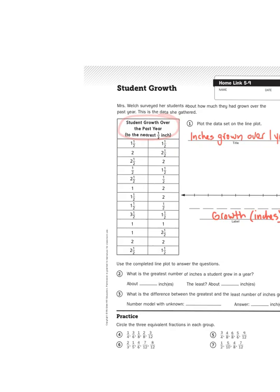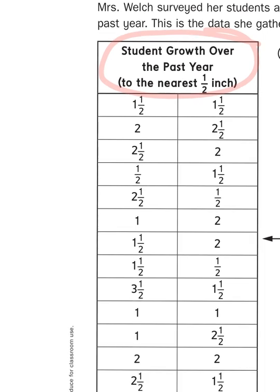Well, as I survey this table, I see that the smallest amount is one-half. It said measure to the nearest half inch, and half inch is the smallest increment grown. Now, let's find the largest amount. Well, those mixed numbers are a good place to start, and the largest whole number that I see is three-and-a-half inches.